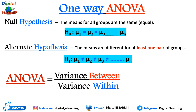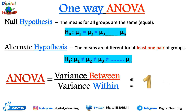Those two parameters are variance between and variance within. If the ratio of variance between to variance within is greater than one, then you reject the null hypothesis. But if this ratio is less than or equal to one, then you fail to reject the null hypothesis. We'll see this applied with some examples.